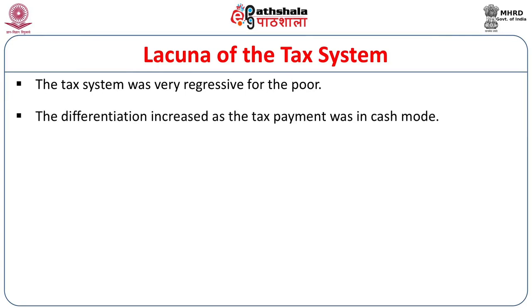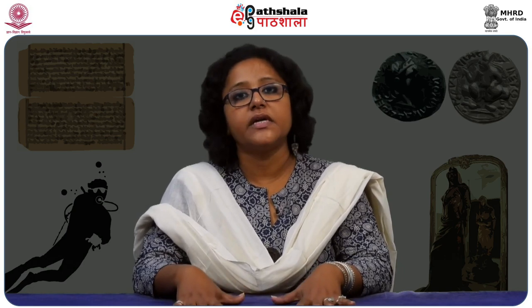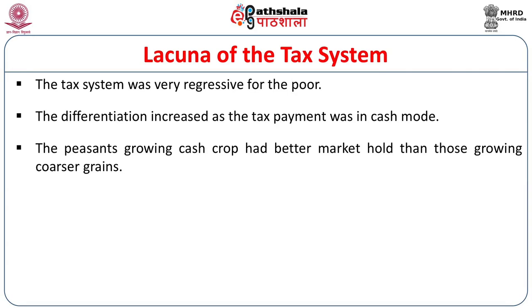The differentiation increased when tax payment was done in cash. Peasants had to sell off their produce immediately to repay the tax, and as a result they did not get the high market price they would have otherwise obtained at a convenient time. The peasants growing cash crops had a better market hold than those growing coarser grains. The demand for cash crops increased with time, so peasants dealing with cash crops had a better opportunity to keep a certain amount of surplus.